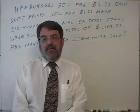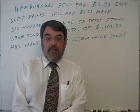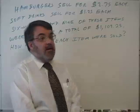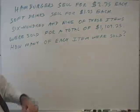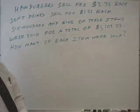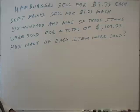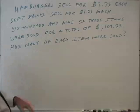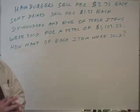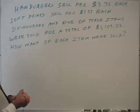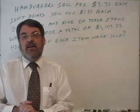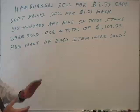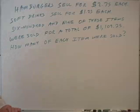Here's a problem which I'm going to begin in this video and finish in the next video clip. Let me read it to you — make sure you can read my handwriting. Hamburgers sell for $2.75 each. Soft drinks sell for $1.25 each. 609 of these items were sold for a total of $1,109.25. So how many of each item were sold?